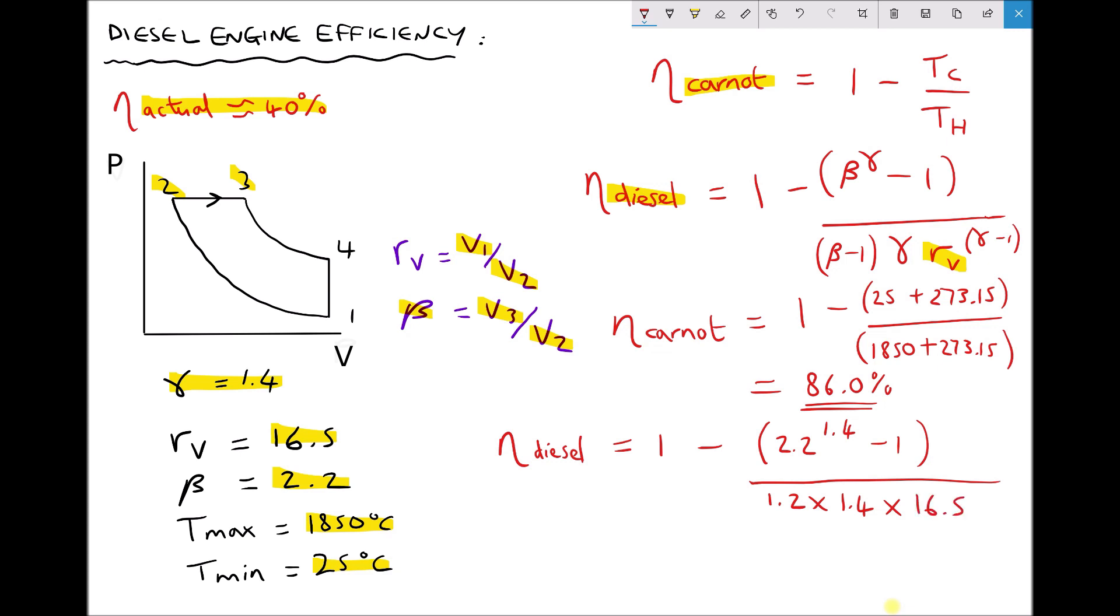We need to raise that volumetric compression ratio to the power of gamma minus 1. Well gamma is 1.4. 1.4 minus 1 is just 0.4.